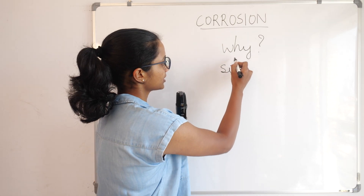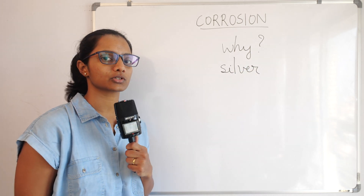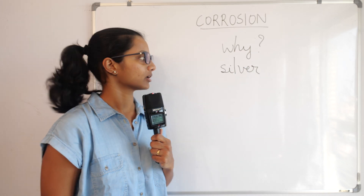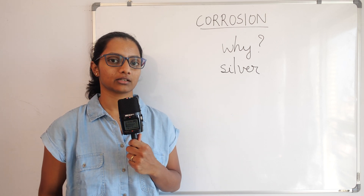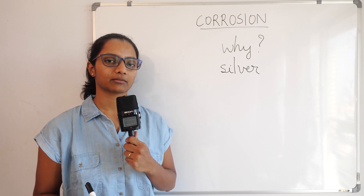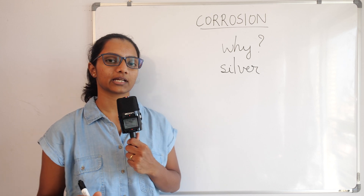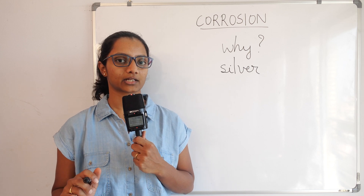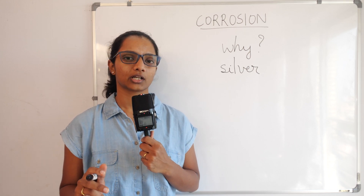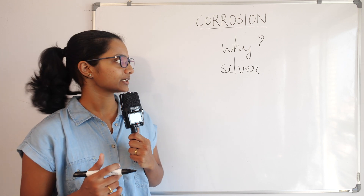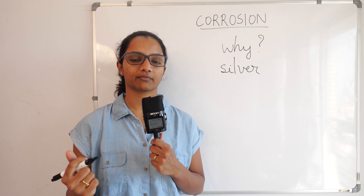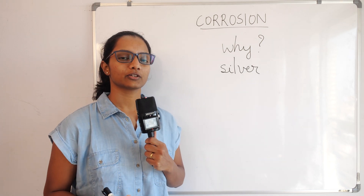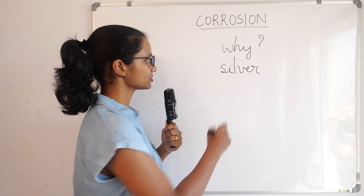Another observation you all should make is about silver. Silver articles that you use in your house — show pieces or ornaments — when you buy them new they are very shiny and lustrous. Over time, these silver ornaments get a blackish coating and look very dull. The reason is that silver reacts with sulphide in the environment and forms silver sulphide.